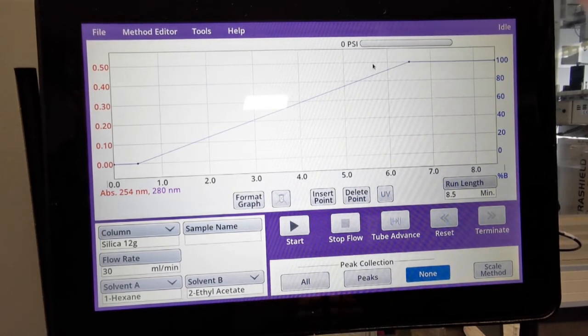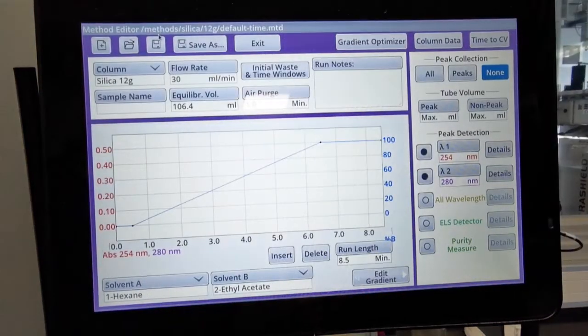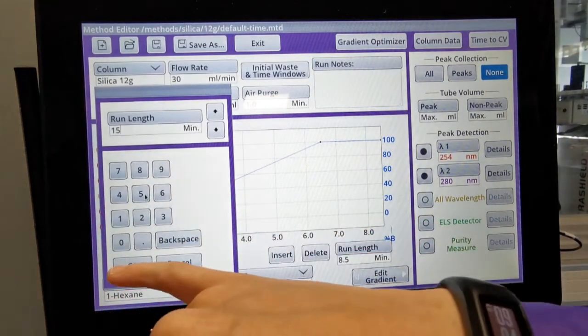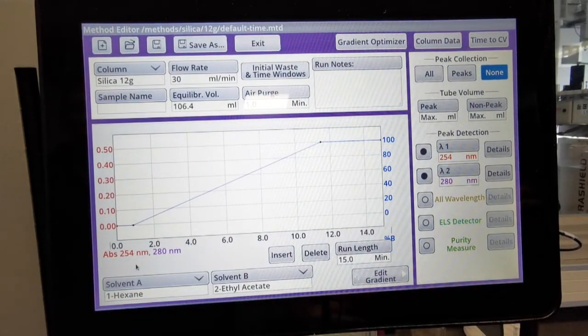From this front screen, if we go into method editor at the top there, we can change the run length. In this case, I'll increase it to 15 minutes and then we want to